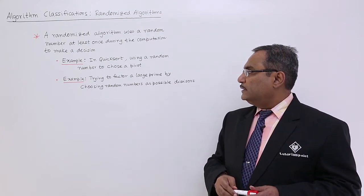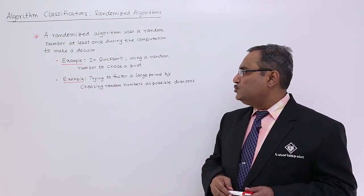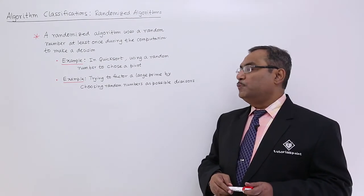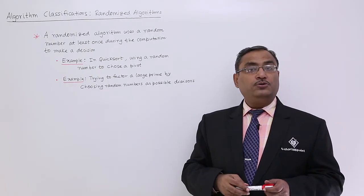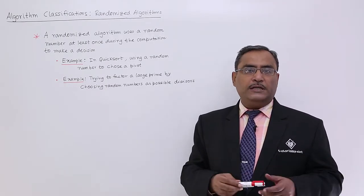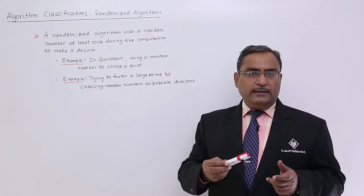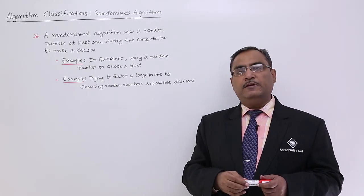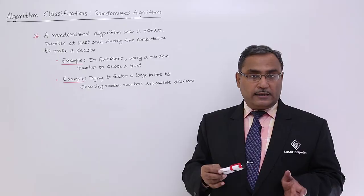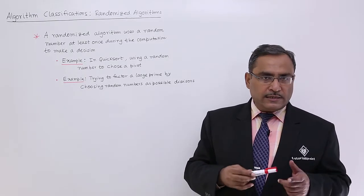Example number 2: trying to factor a large prime by choosing random numbers as possible divisors. So to check whether a number is prime or not, you are taking these random numbers to check whether it can divide the large number or not, whether it is a divisor or not.